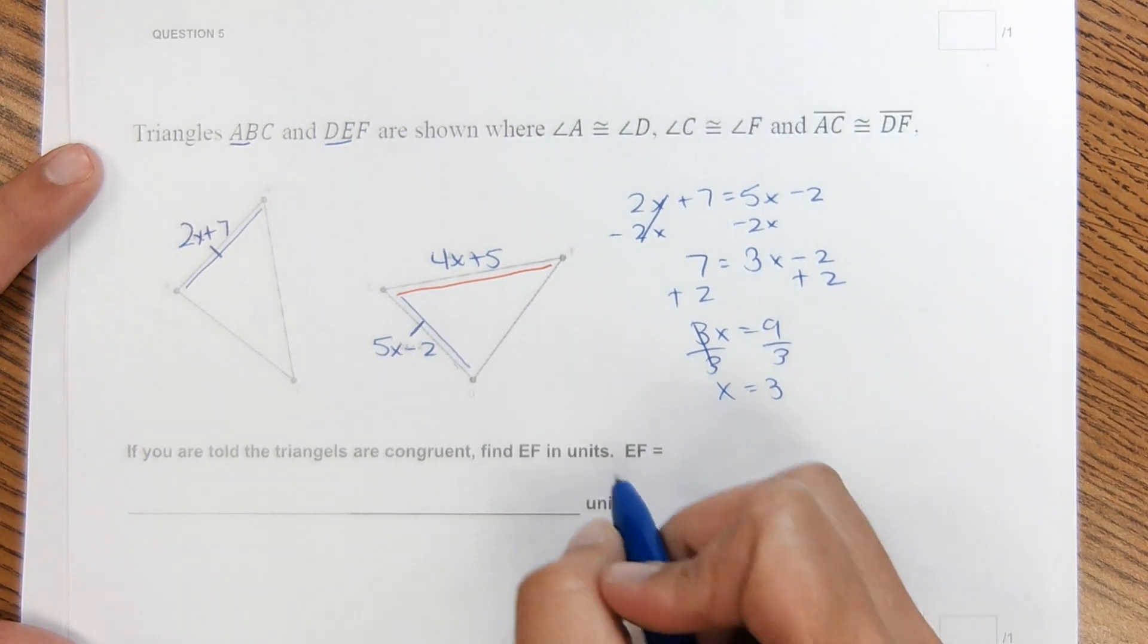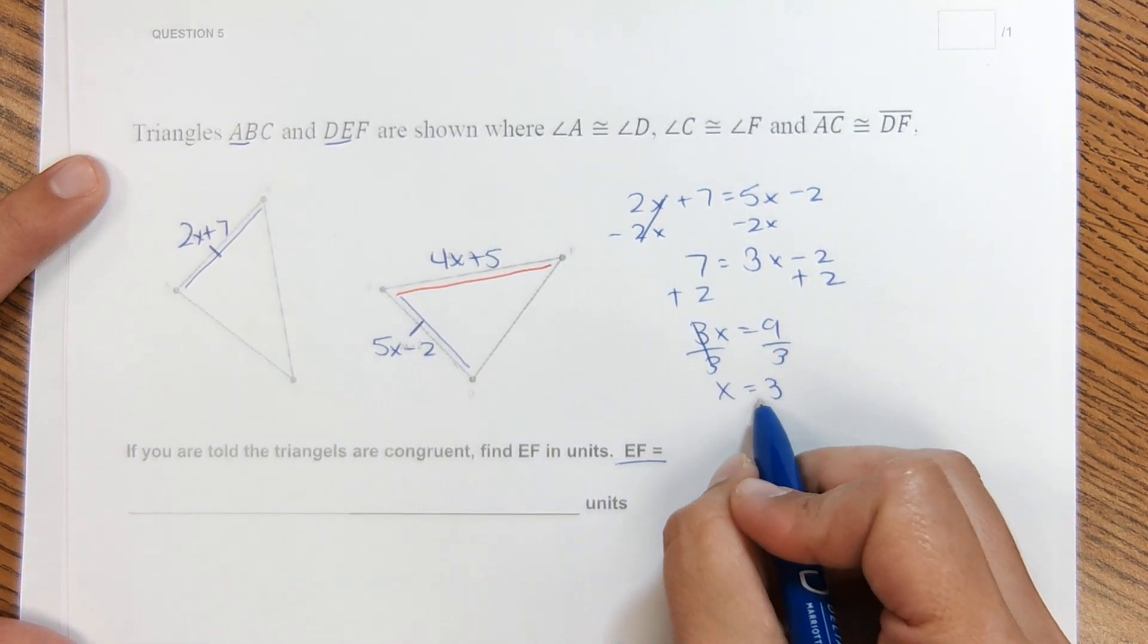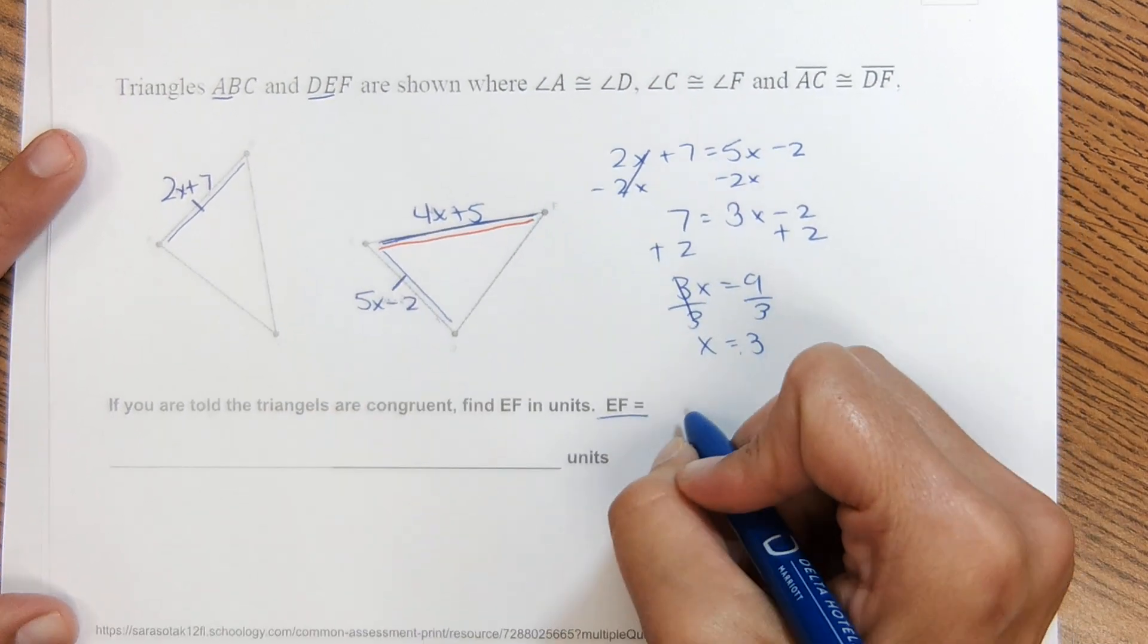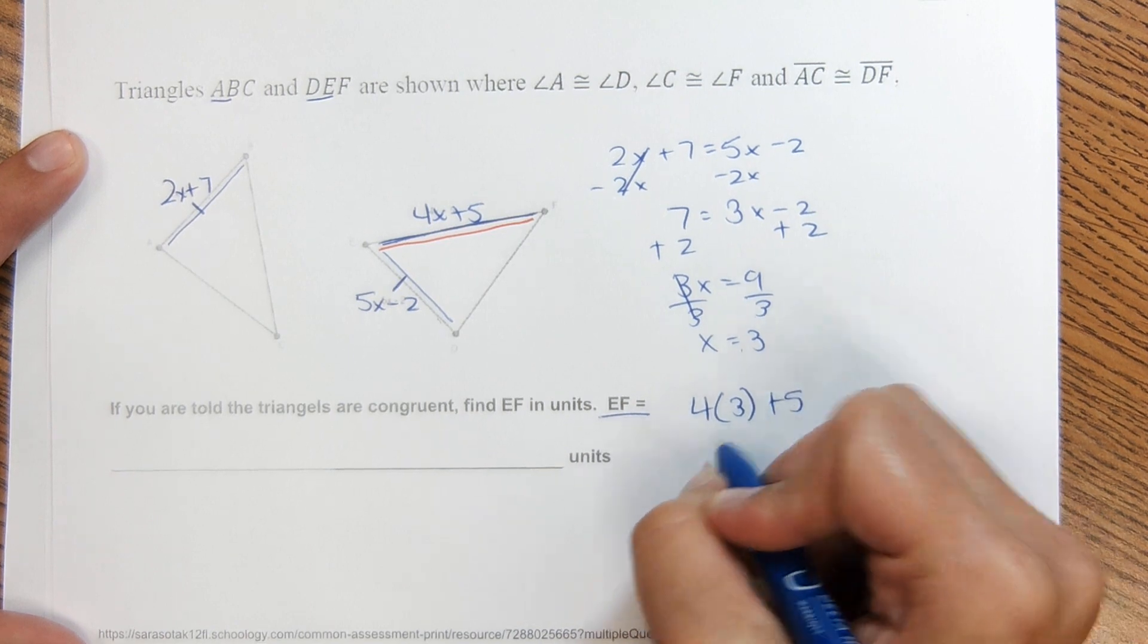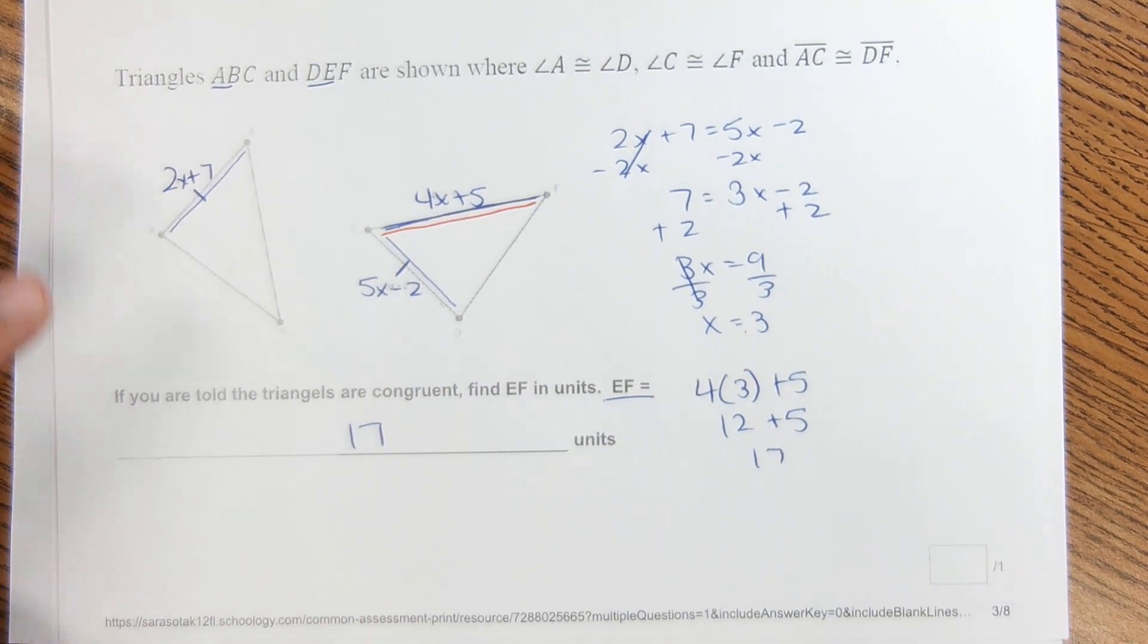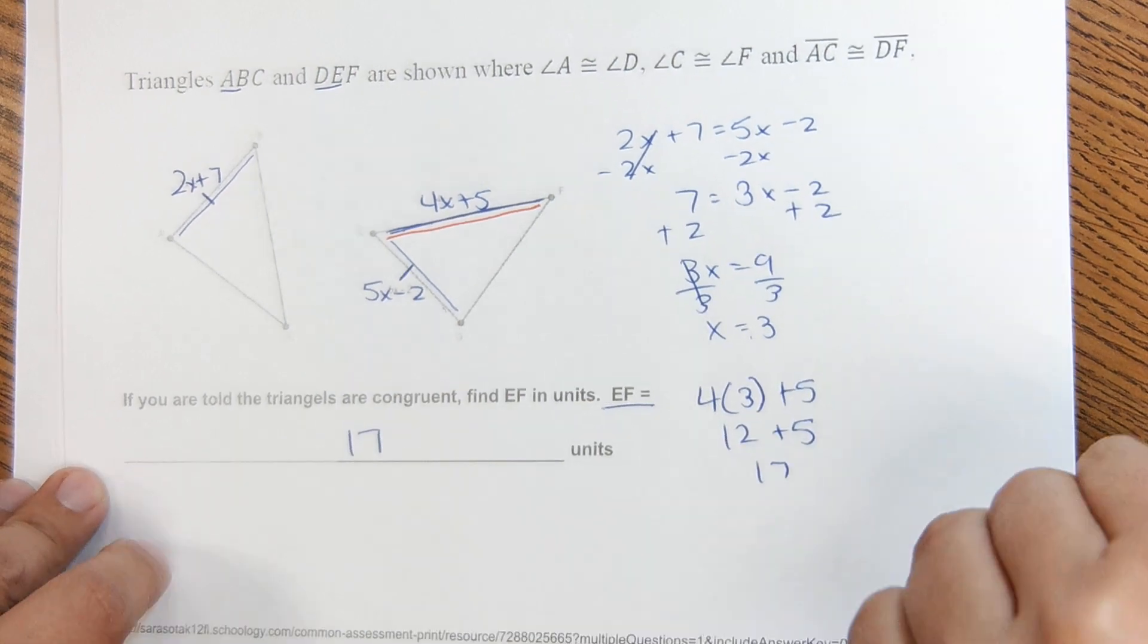But this isn't asking for x. It's asking for the length of EF. Now that I have x though, I can find the length of EF right here by plugging in the value. So 4 times 3 plus 5. 12 plus 5 would be 17. And that is the length of EF. Okay, next page.